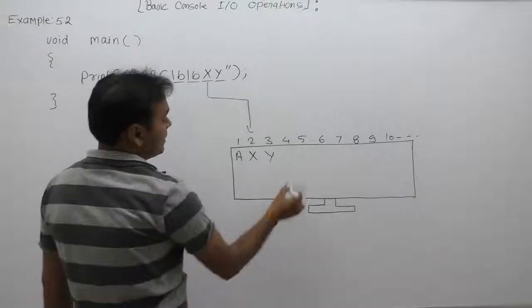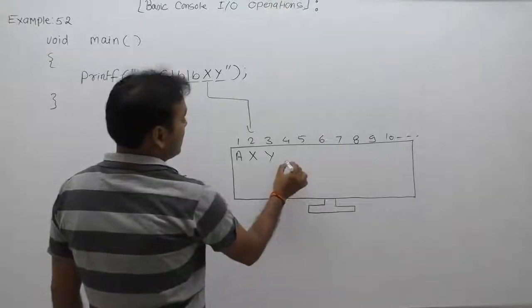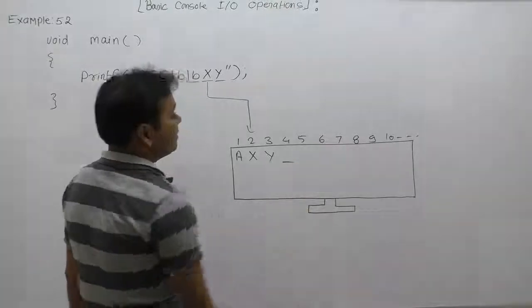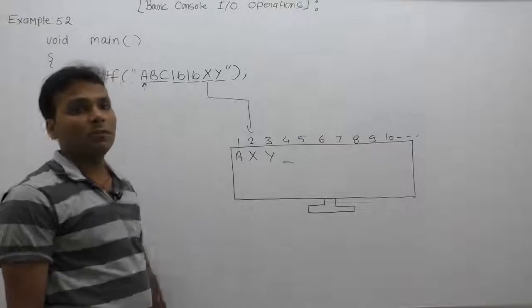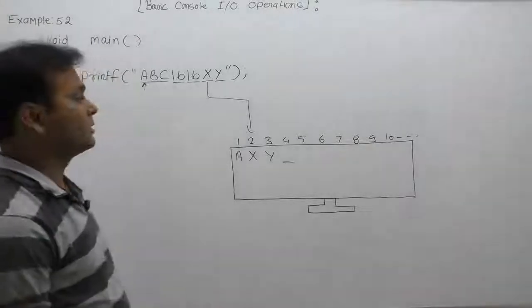This is the final result of the given printf function — characters 'b' and 'c' have been replaced by 'x' and 'y' respectively using the backspace escape sequence.